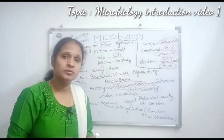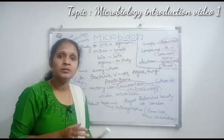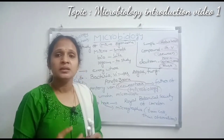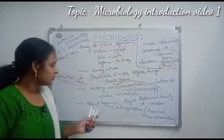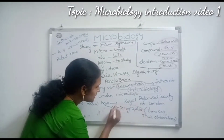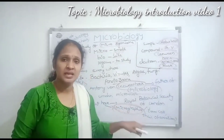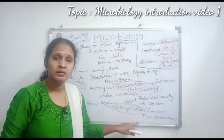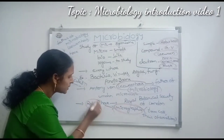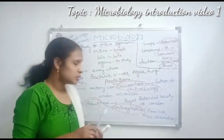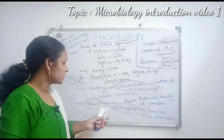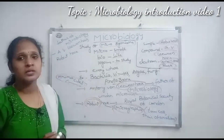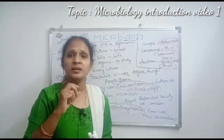Robert Hooke also worked on microorganisms. Both he and Antony van Leeuwenhoek recorded their observations with the Royal Botanical Society of London. Robert Hooke wrote the book Micrographia, in which he mentioned the term 'cell.' This is important for competitive exams — the question 'Who wrote Micrographia?' is a two-marks question for first and second year students.